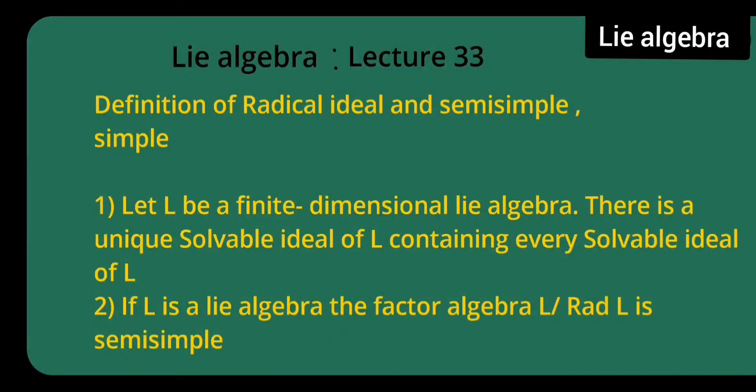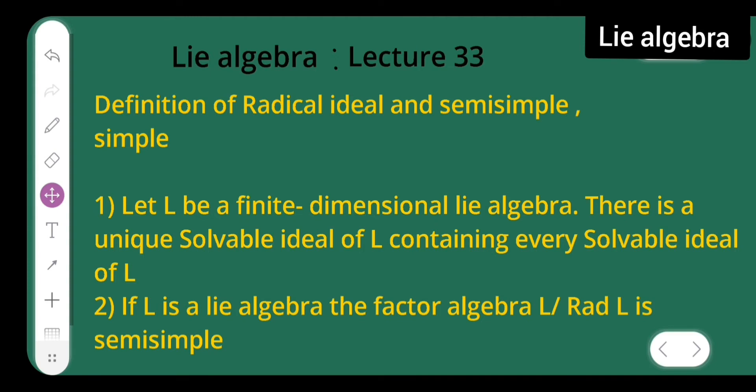In today's lecture of Lie algebra, that is lecture 33, I will be giving the definition of radical ideals and semi-simple, then simple, and some remarks, along with two lemmas. Let l be a finite dimensional Lie algebra — there is a unique solvable ideal of l containing every solvable ideal of l, and if l is a Lie algebra then the factor algebra l by rad(l) is semi-simple.